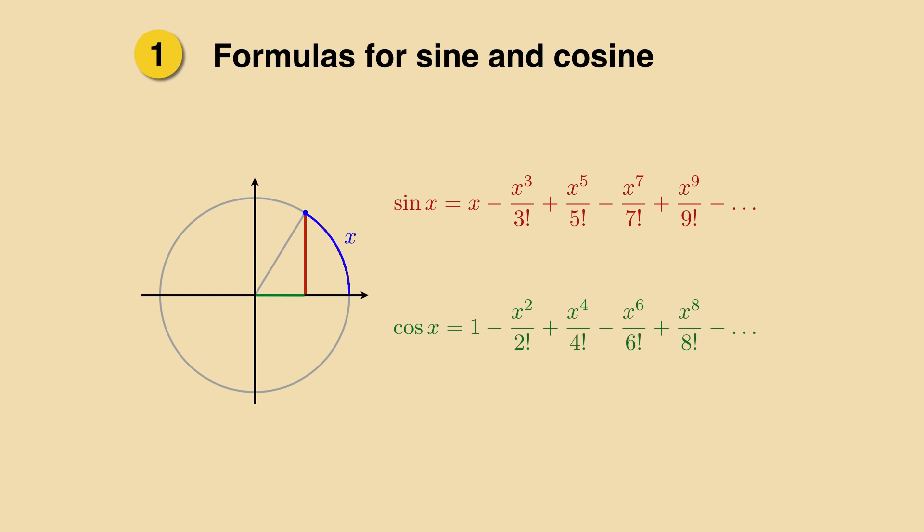First, we find formulas for the sine and cosine of an angle. This is never done in school because we have calculators. But how does the calculator find the sine of an angle? The goal will then be to show that for rational values of x, the tangent, that is sine divided by cosine, is irrational.